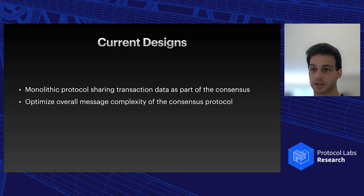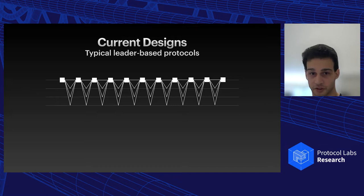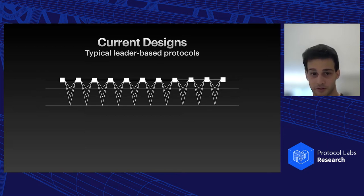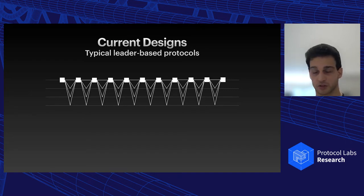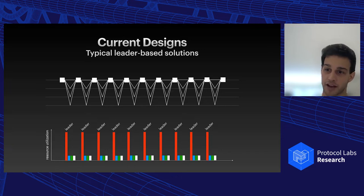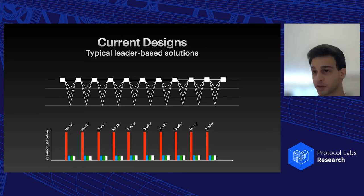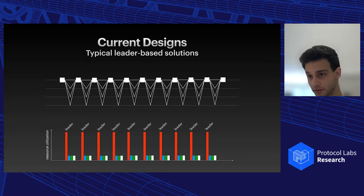This is probably one of the key problems for scalability today. In a traditional leader-based protocol, a leader makes a proposal, broadcasts a block to all other replicas, gathers votes into a certificate, and rebroadcasts the certificate. When we look at resource utilization, when a node is the selected leader it's the bottleneck — using a lot of its storage, CPU, and bandwidth — while the other replicas are brutally underutilized.